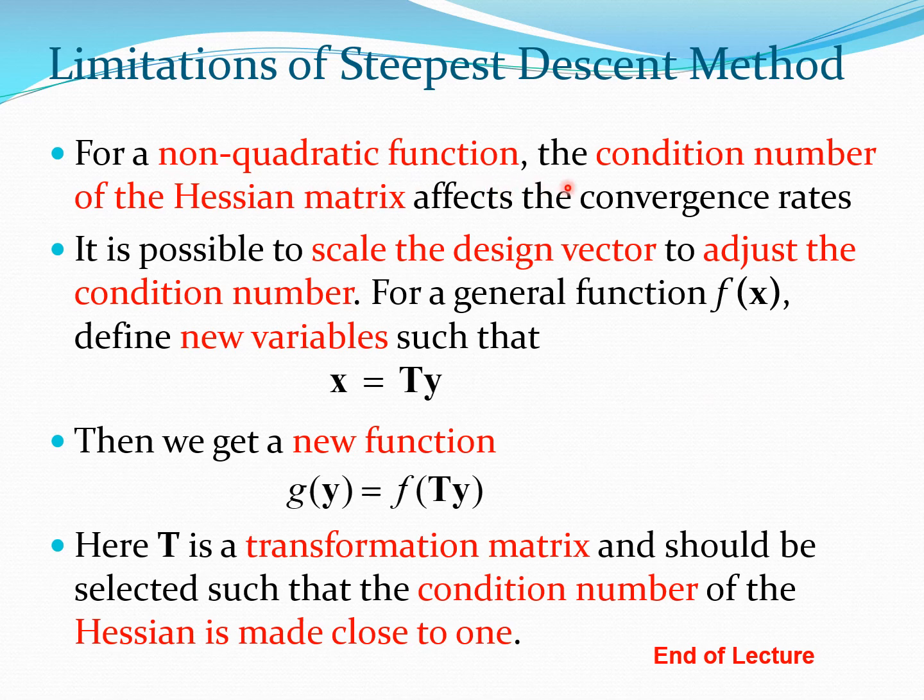For a non-quadratic function, the condition number of the Hessian matrix affects the convergence rates. Like I mentioned before, it is possible to scale the design vector to adjust the condition number. For example, we could have a function f of x and we could define a new variable y such that x is Ty, where T is a transformation matrix. If we put this particular value into the function, then we get a new function g in terms of y. If you have selected this matrix T in a very judicious manner, then the condition number of the Hessian can be made close to 1, and in case that has happened then you will find this method will converge much faster. So this is a kind of secret which you can use in many conditions, and this also tells you why scaling is so important in many cases.